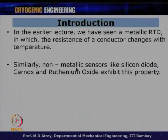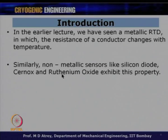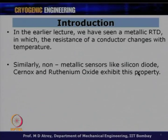Now, non-metallic sensors are also preferred for various reasons — we can make the kind of sensor we want. Non-metallic sensors like silicon diode, Cernox, and ruthenium oxide also exhibit temperature-dependent properties. They were metallic sensors earlier; now we have non-metallic sensors like silicon diode, Cernox, and ruthenium oxide, where resistance also changes with temperature.